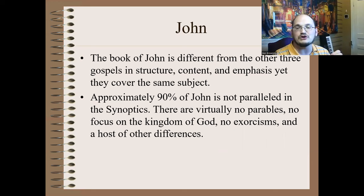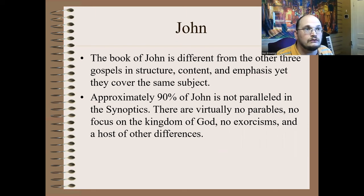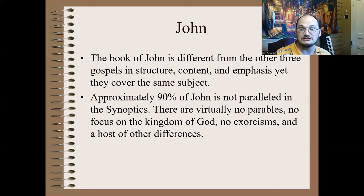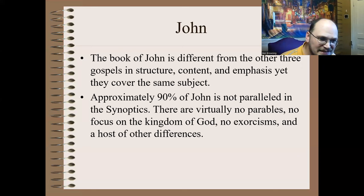The synoptic gospels all look the same — they share similarities, generally take place in the Galilee area, ending in Jerusalem, and they have a generally similar timeline. The order changes a little bit but is generally the same. That is different with the Gospel of John. Not only is it in a different order, it has a generally different geographic location, mainly focusing on Jesus's ministry in Jerusalem, and it also tends to word things differently.